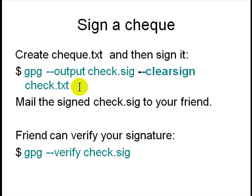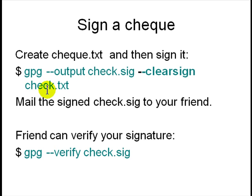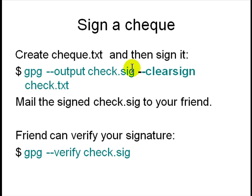Similarly, you can use GPG to sign a document like a check. You say 'gpg --output check.sig --clearsign check.' Then you mail the check and the signature to your friend. Your friend can verify that you actually signed the check and that it wasn't modified on the way.